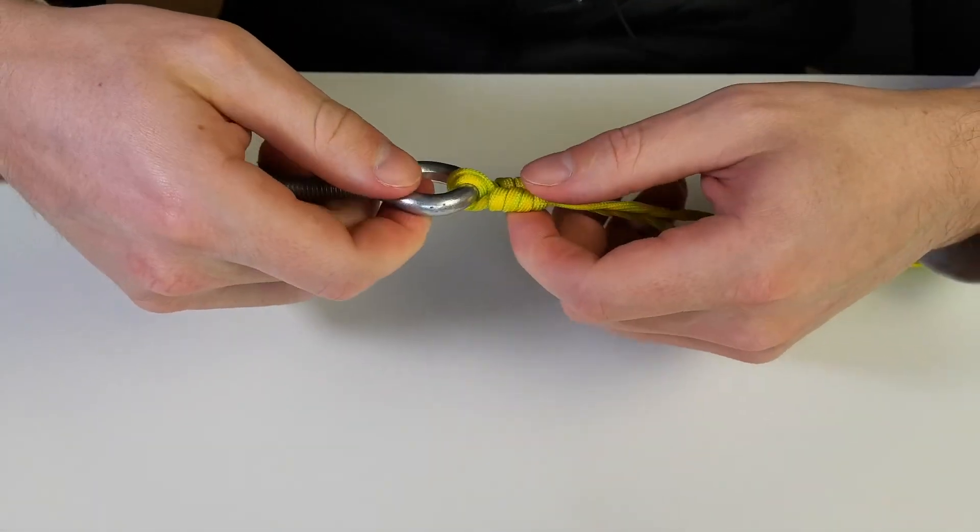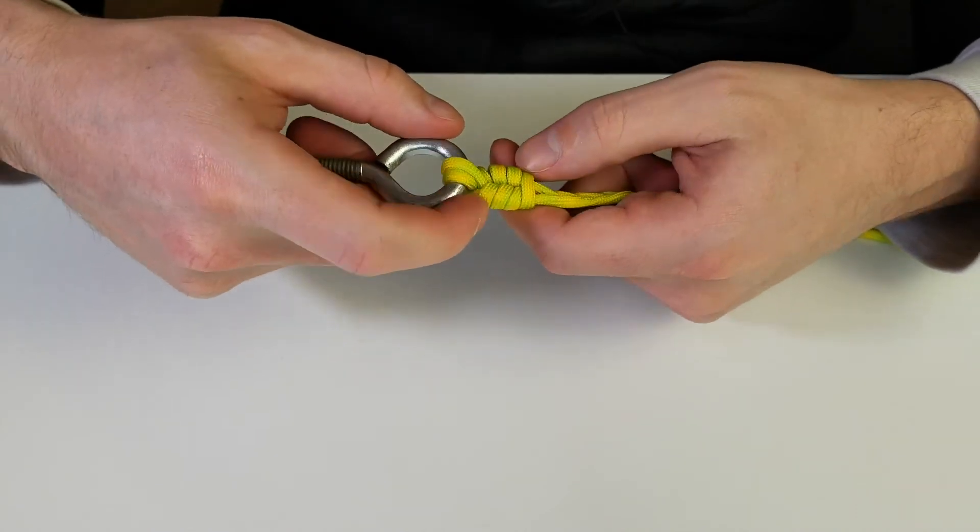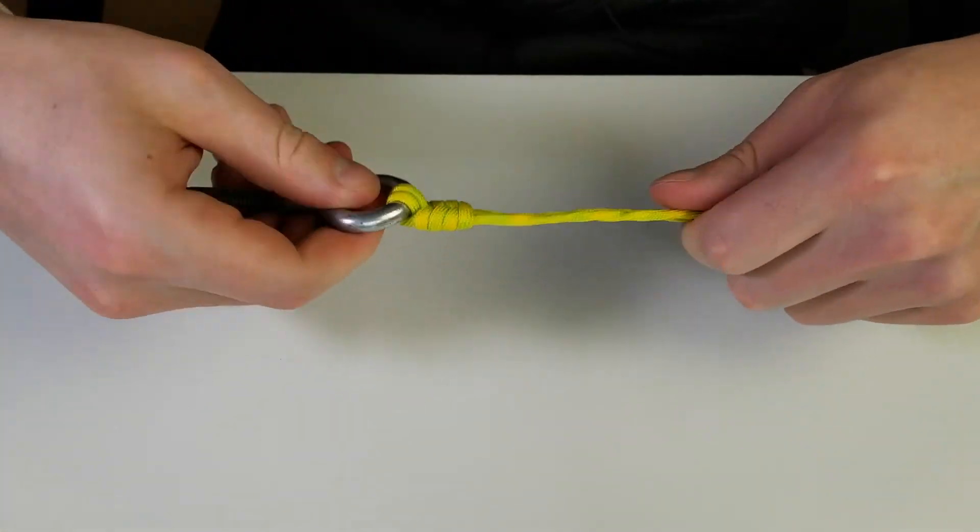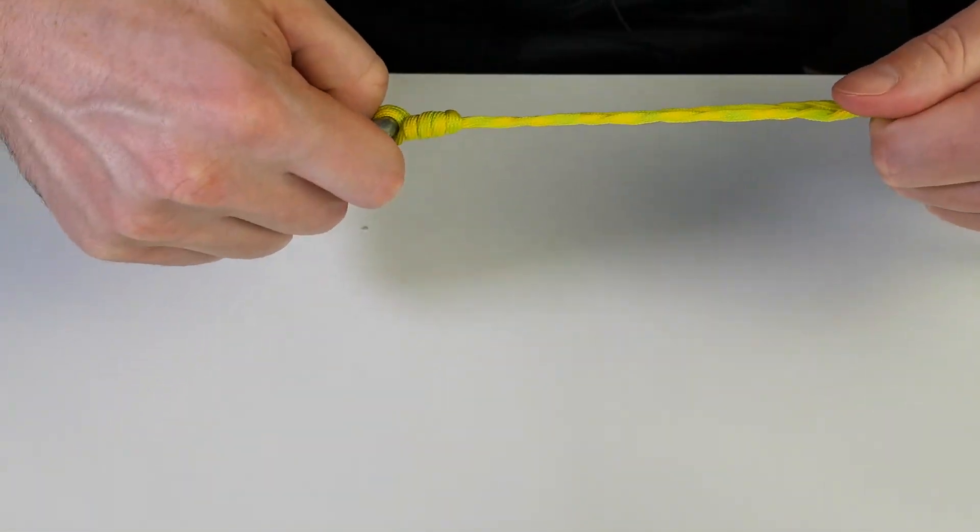All you have to do is make sure everything looks nice and tight, make sure these wraps are all kind of nice and together, pull it down as far as you can. Once everything looks pretty good, you can grab your swivel, grab your line, and really cinch it down tight.